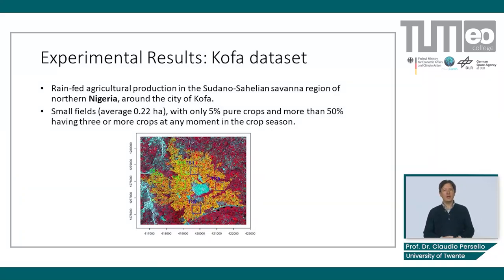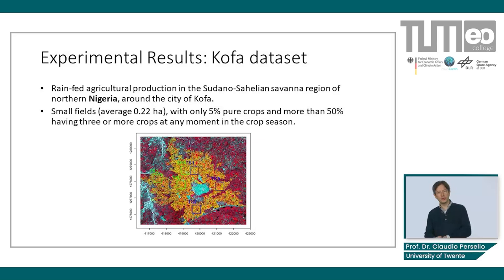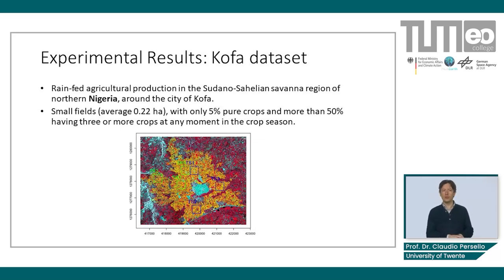We carried out an experimental analysis comparing the proposed approach against several baseline methods. We adopted a WorldView image acquired over the agricultural area around the city of Kofa in Nigeria. Reference boundaries were collected in the field and used for training and testing our method. The agricultural fields in this area are small and most of them are cultivated using a multi-crop system. The figure shows a false color composite of the satellite image over the study area and the distribution of training and test tiles.